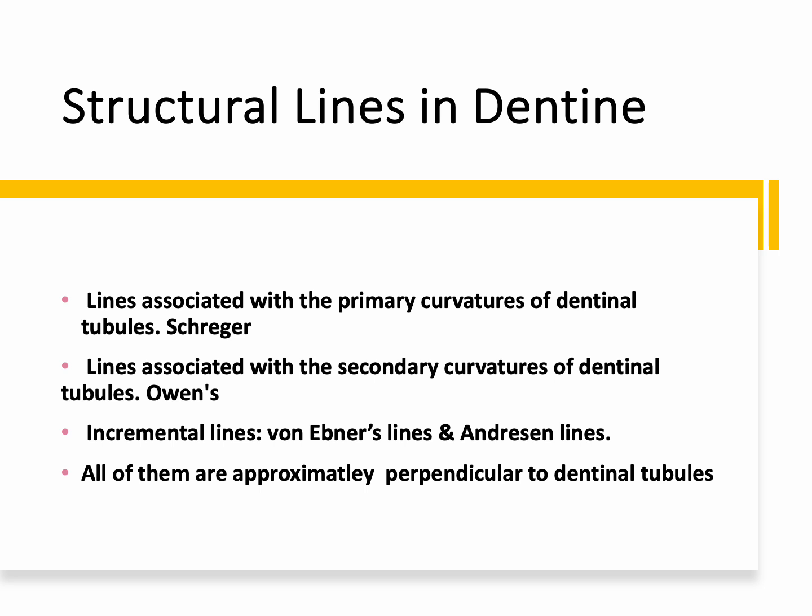The first type of lines are associated with the primary S-curvature of the dentinal tubules — these are called Schreger lines. The second kind are associated with the secondary curvature of dentinal tubules and are called contour lines of Owen. The third kind are the incremental lines: the daily ones are called von Ebner lines, and the weekly ones are the Anderson lines. The Anderson lines also have some relation to contour lines of Owen, which will be discussed in detail later.